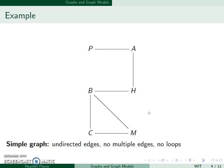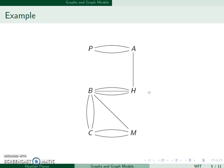However, there may be reasons to consider multiple edges. For instance, what if there's three different flights between Boston and Hartford in a day?